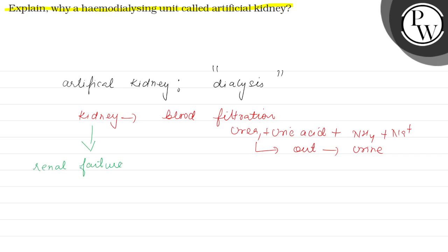In cases of renal failure, there are some individuals whose kidneys do not function. For them, dialysis acts as the artificial kidney — blood filtration. That is called the haemodialysis unit: 'haem' means blood, and 'dialysis' means filtration.